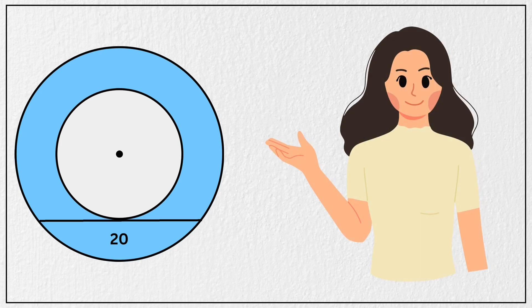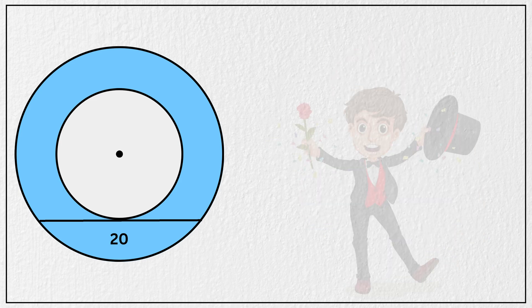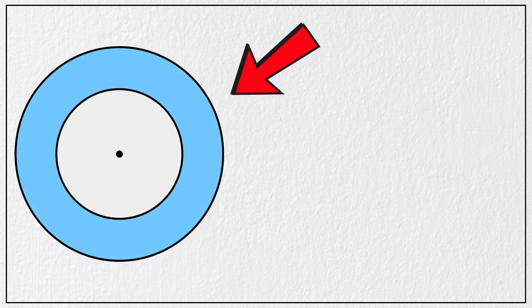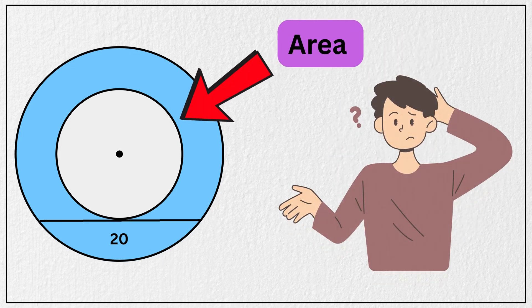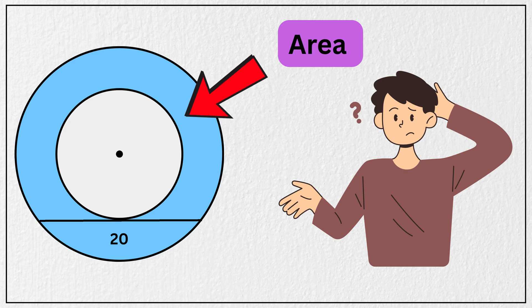This geometry problem is so clever that when you see the answer it feels like magic. We are given two concentric circles, one inside the other like this, and a chord of length 20 units from outer circle touching the inner circle like this. And our goal is to find the area of this blue shaded ring.